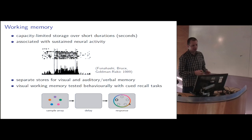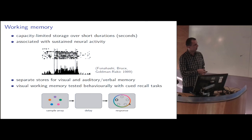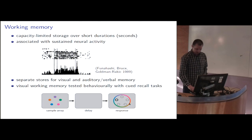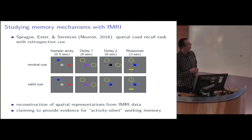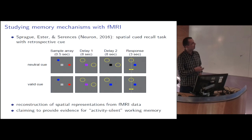Visual working memory is tested behaviorally in humans, often with this kind of acute recall task, where subjects are presented with a sample array for a brief time, then there's a delay of a few seconds, and then they have to report the feature of one item from the sample array — in this case the color at the cued location on a continuous scale like a color wheel. In a recent fMRI study, Sprague, Ester, and Serences used this kind of task to illuminate the mechanisms of working memory, in their version a spatial working memory task with a retrospective cue in some trials.